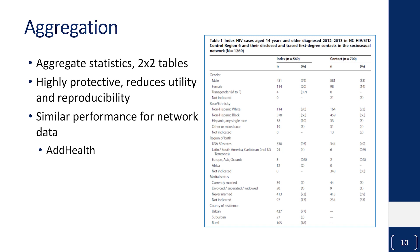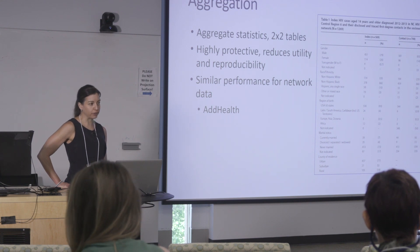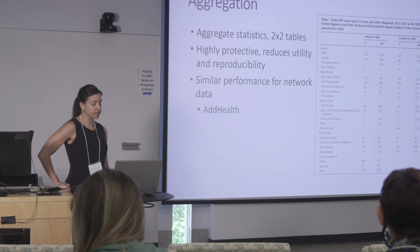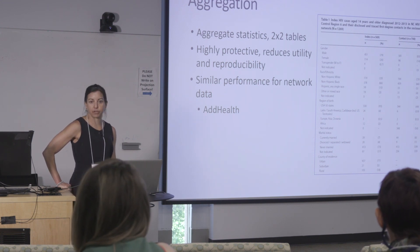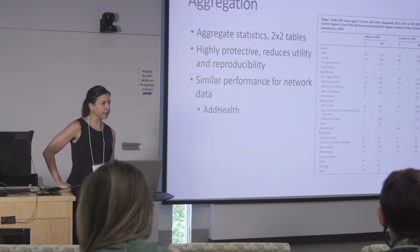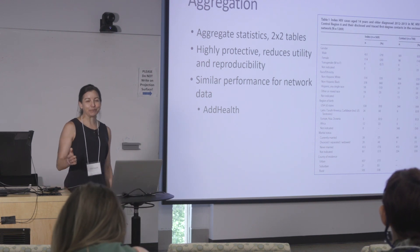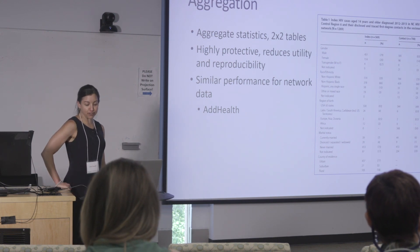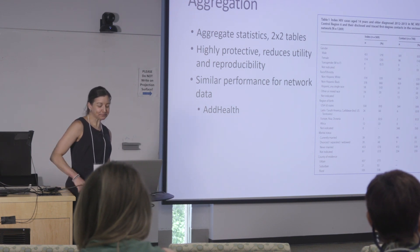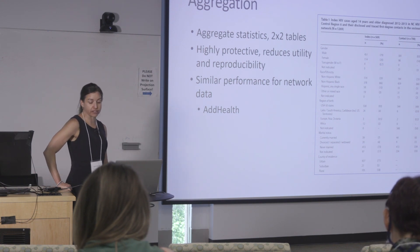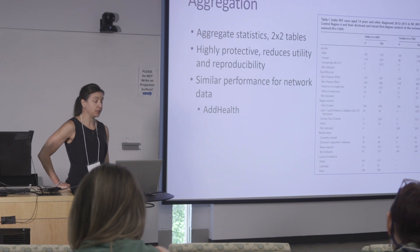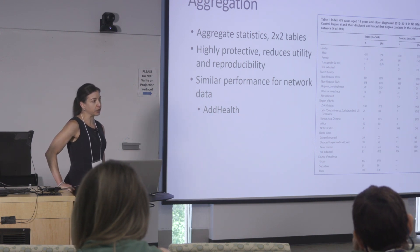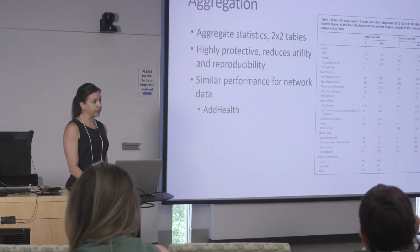The first strategy is aggregation, which reduces data to what you'd commonly see in a clinical Table 1 — looking at just the marginal probabilities of people. Proportions are calculated for a variable of interest, and you can also do this with network statistics such as density or other aggregated network statistics. Aggregation is highly protective for subjects, but the utility and repurposing are really low. The ability to conduct additional analyses or reproduce what was already done is affected by aggregating. For network data, it's highly protective, but there's not much utility or ability to check the rigor.